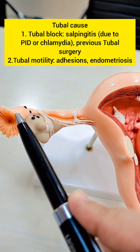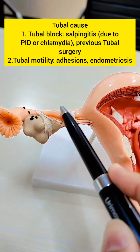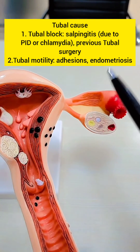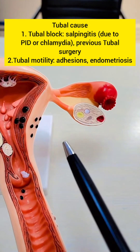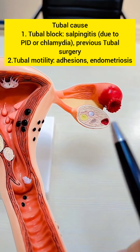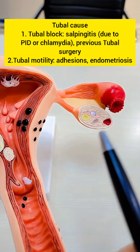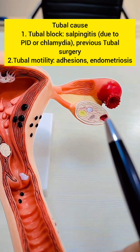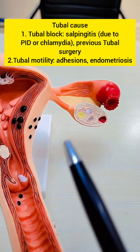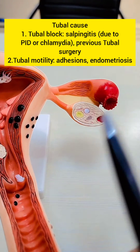The second thing we think of is problems in the fallopian tube, and this could be because of problems due to patency — that is, there is a tubal block — or due to tubal motility problems, that is the tube is not functioning properly.